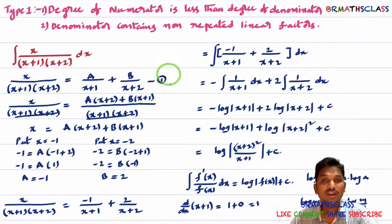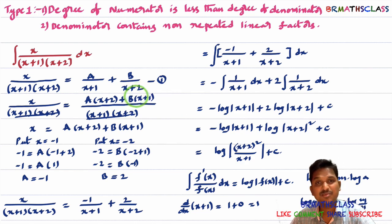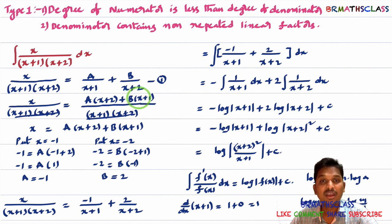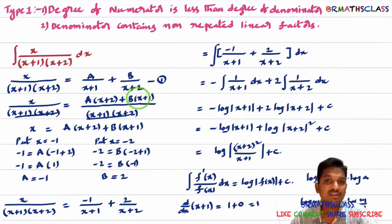That's it. The key takeaway is: by seeing the problem, you need to identify which type it comes under. Once identified, you need to know how to write that rational function into partial fractions. After that, the procedure is as usual.